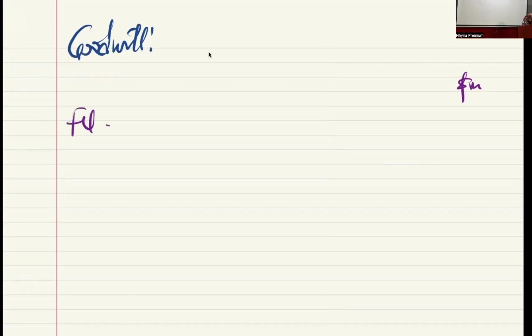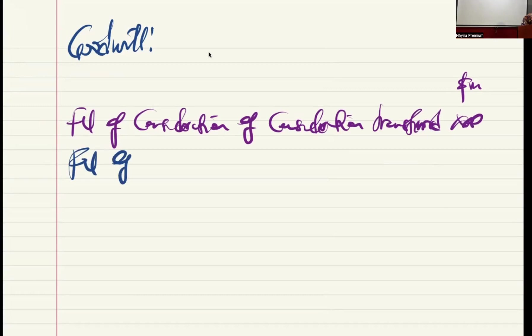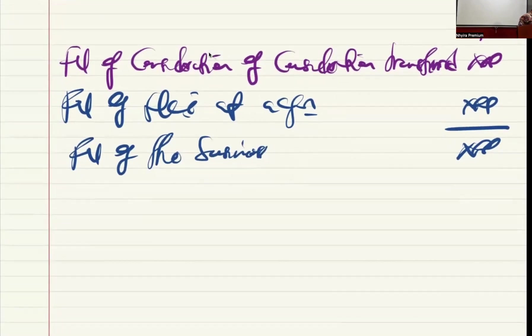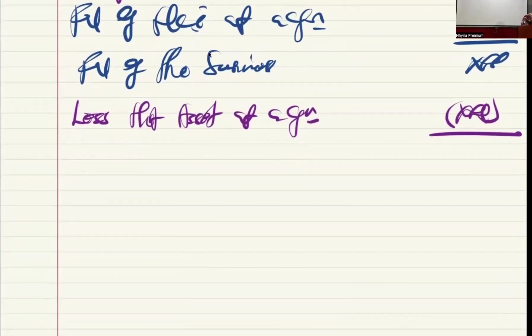All right. So goodwill is simply going to be as follows. The fair value of consideration transferred, the fair value of non-controlling interest at acquisition, that is if we have not acquired 100% of the company, that gives us the fair value of the business. We will less the net assets at acquisition, and boom, we get goodwill.